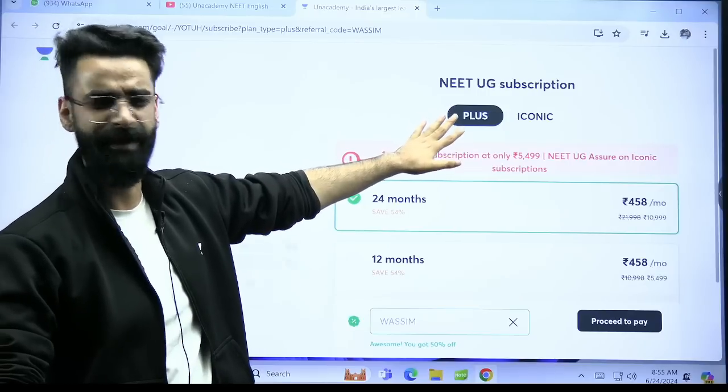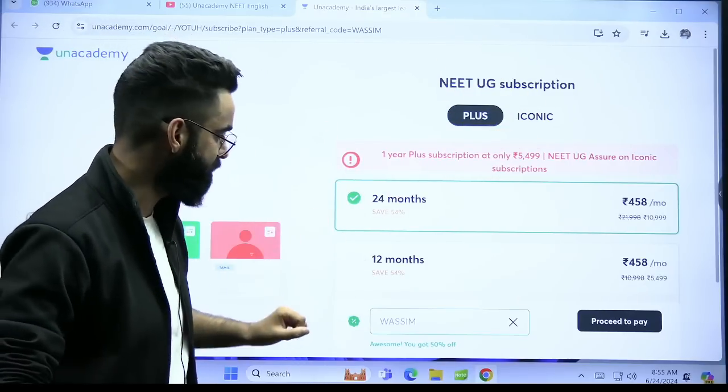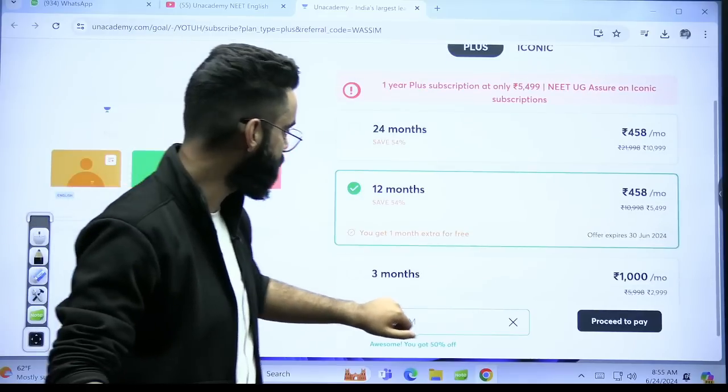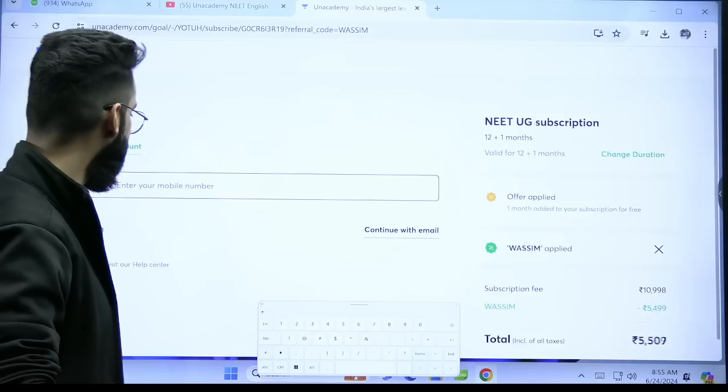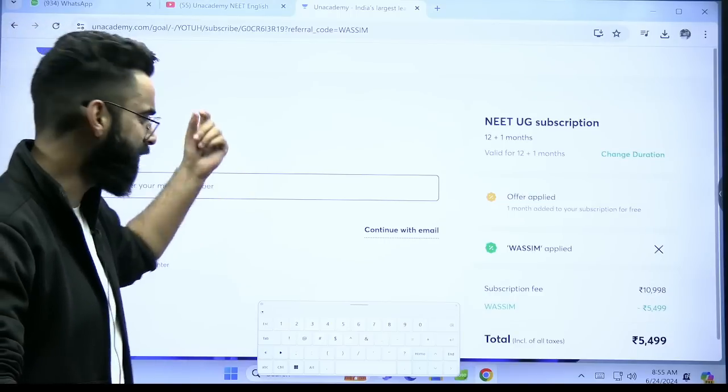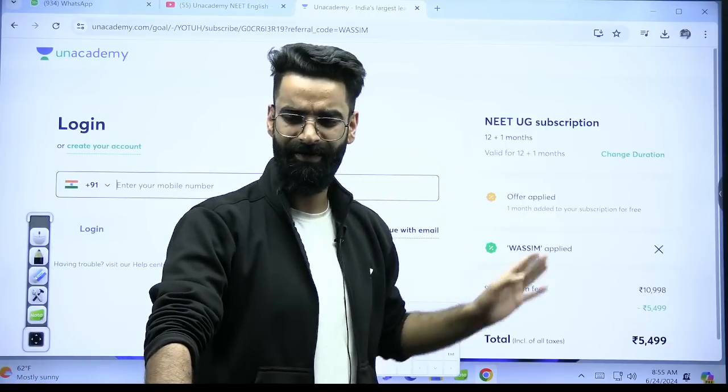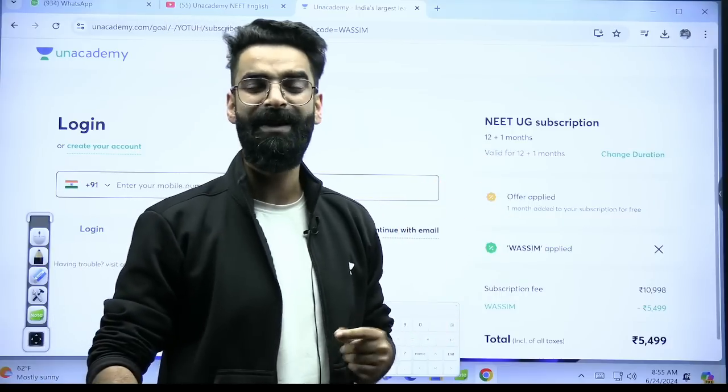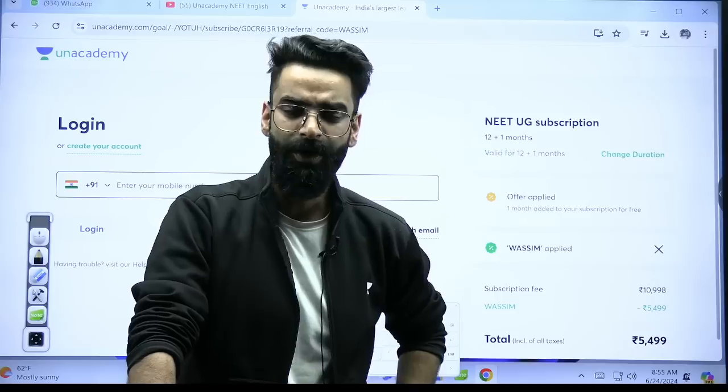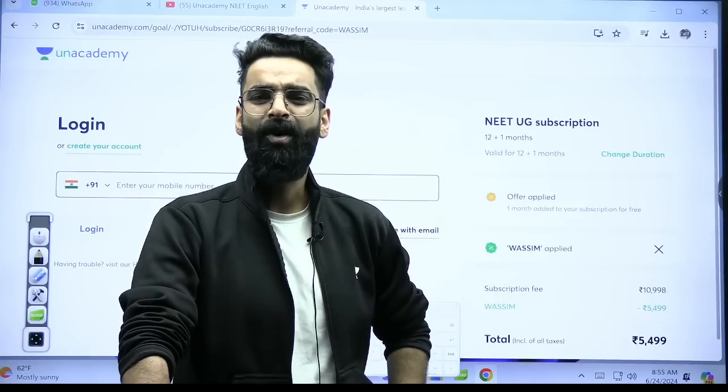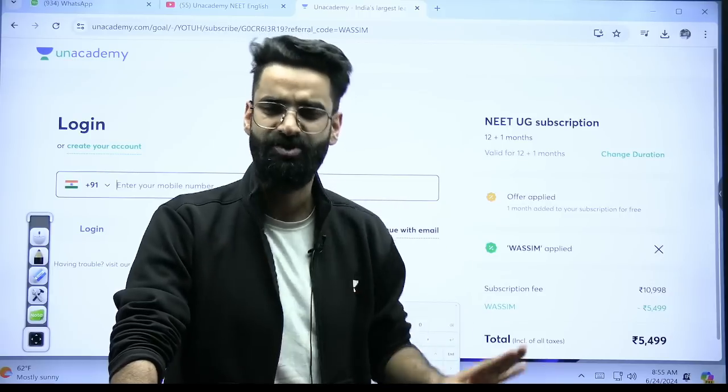In the plus, you get study material in the form of DPPs. In the iconic, you get study material in the form of booklets and those booklets will be delivered to your houses. So here you have to click on 12 months. Then click on proceed to pay. Once you click on proceed to pay, you just have to put your number on which you will be getting the OTP or you can continue with your email ID and eventually, this particular batch, you are just getting at the rate of 5,499. After a few days, the price of this particular batch is going to raise and the same batch, you will be getting exactly at 8,000 after a few days. So the ones who have made their mind of writing the NEET examination in 2025, I would say Phoenix 3.0 is going to be the best choice for all of you guys.